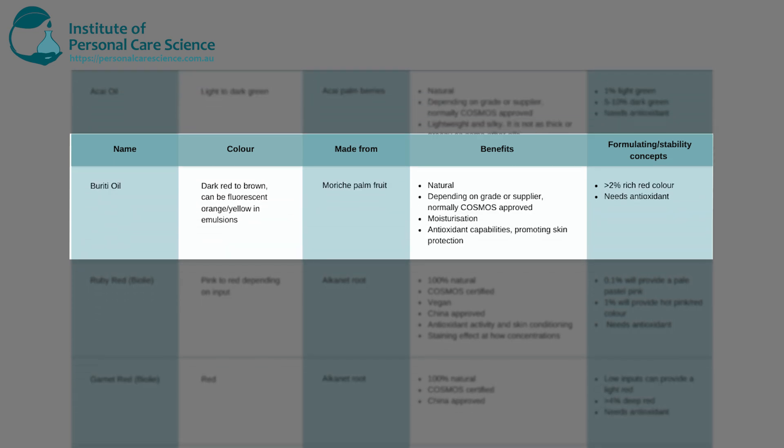Another oil I don't have an example of here is Buriti oil. As the oil itself, it's dark red to brown, but it can provide quite a fluorescent orangey-reddish-yellow in emulsion, giving a really nice vibrant color. It's from the Merige Palm Fruit, it's natural, and depending on the supplier, it normally comes Cosmos approved or certified. It has good moisturization and some really good antioxidant capabilities which promote skin protection. Over 2% will give you that really nice rich fluorescent color in an emulsion or other cosmetic products.